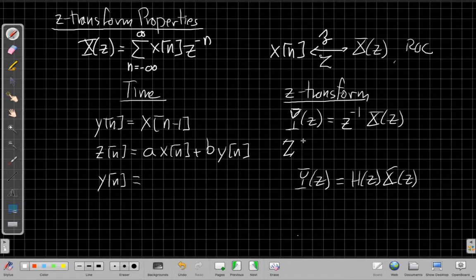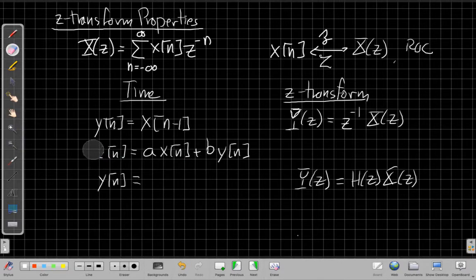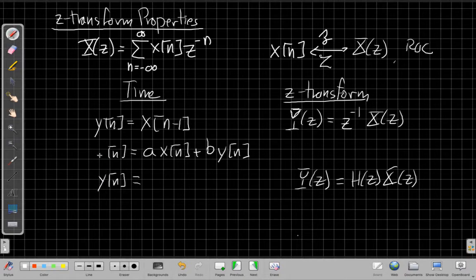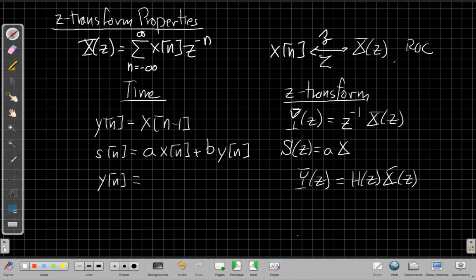Another good property, maybe Z was a bad choice here. I'm going to change this on the fly just because we've got too many Z's with the Z-transform. Let's call this variable S. That'll be easier. So if I have s[n] is equal to a scaled and summed version, I still have linear properties. So S(z) is equal to a times X(z) plus b times Y(z).